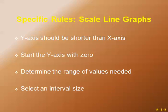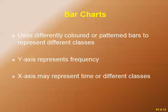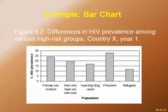Determine the range of values needed and select an appropriate interval size on both the x-axis and y-axis. Bar charts or bar graphs use differently colored or patterned bars to represent different classes, where the y-axis represents the frequency and the x-axis may represent either time or different classes. An example is differences in HIV prevalence among various high-risk groups for country X: female sex workers, men who have sex with men, injecting drug users, prisoners, and refugees on the x-axis.